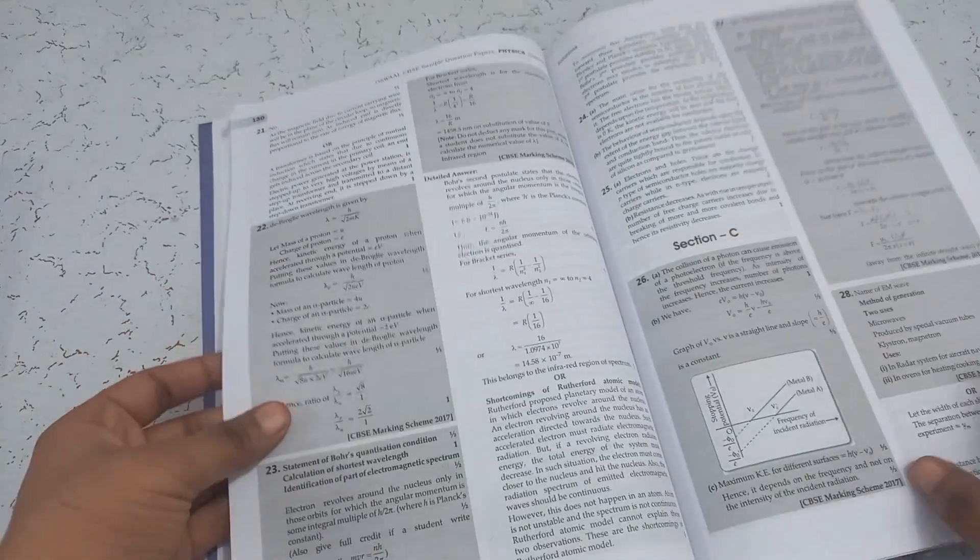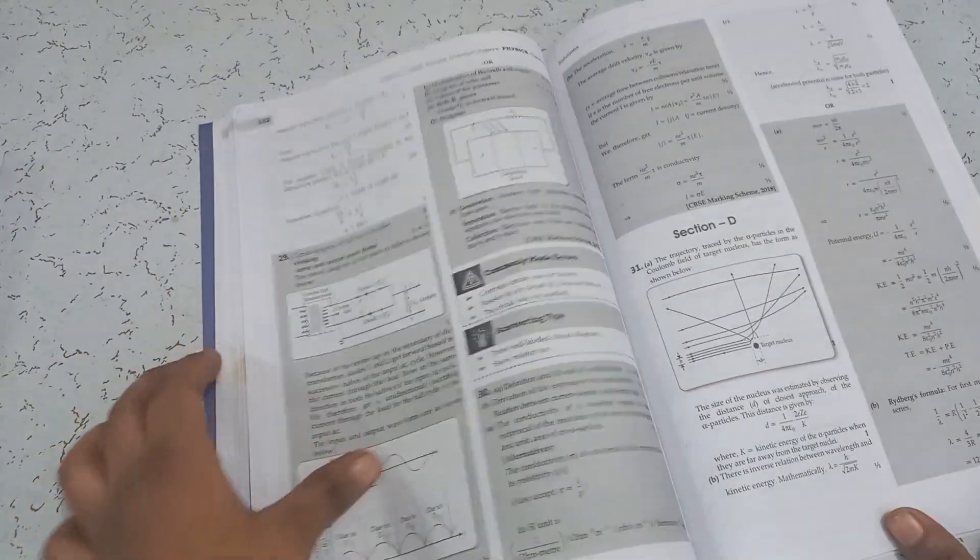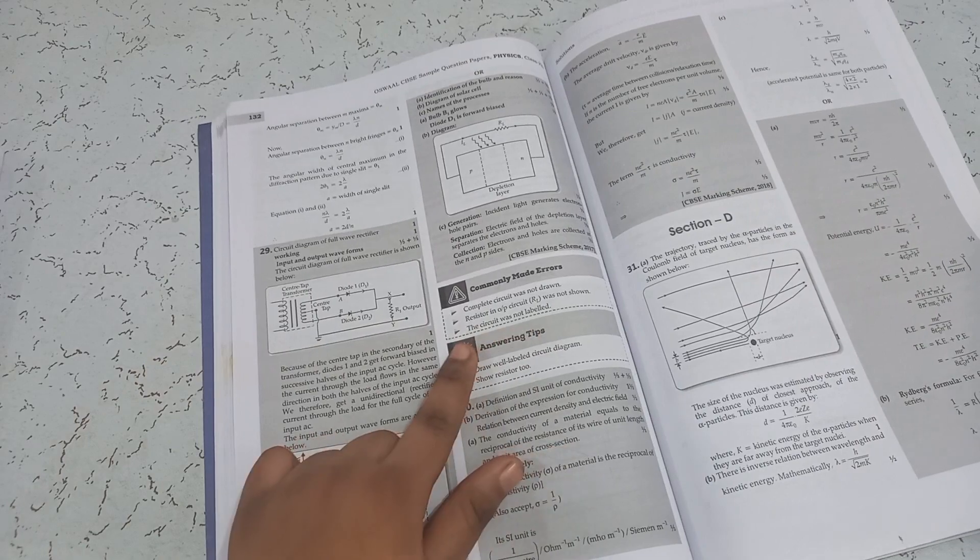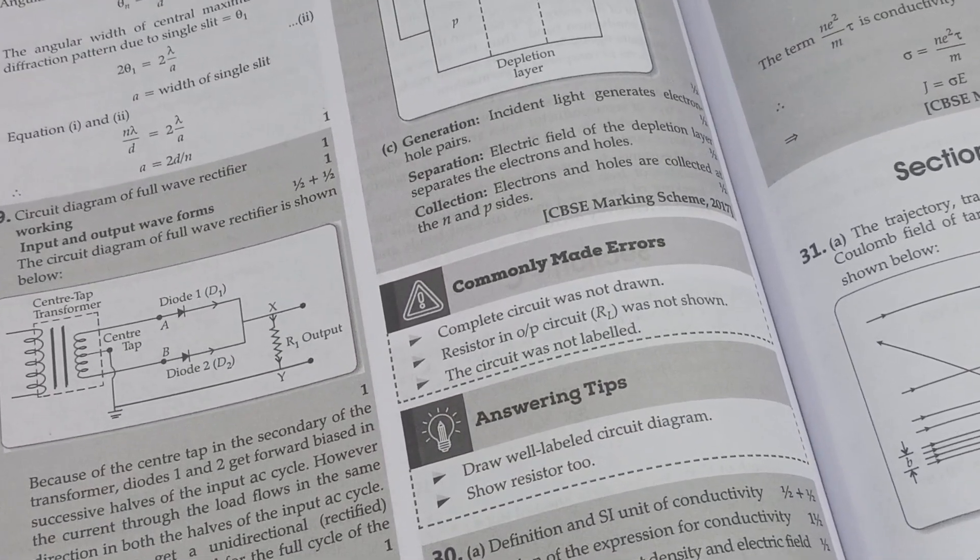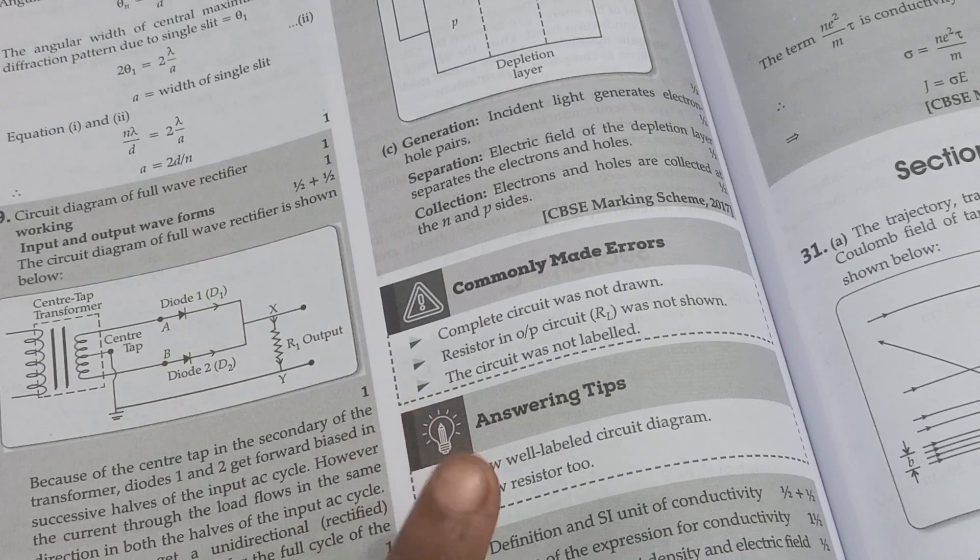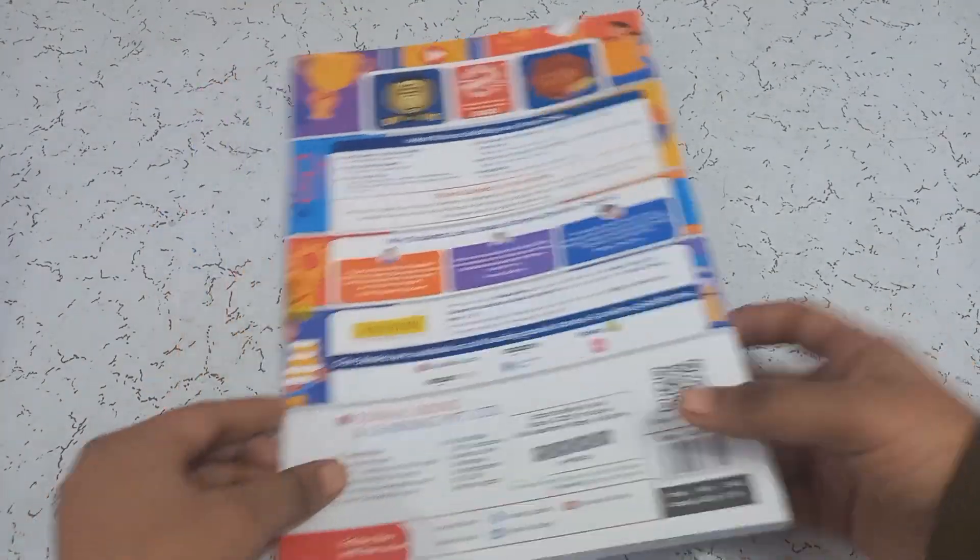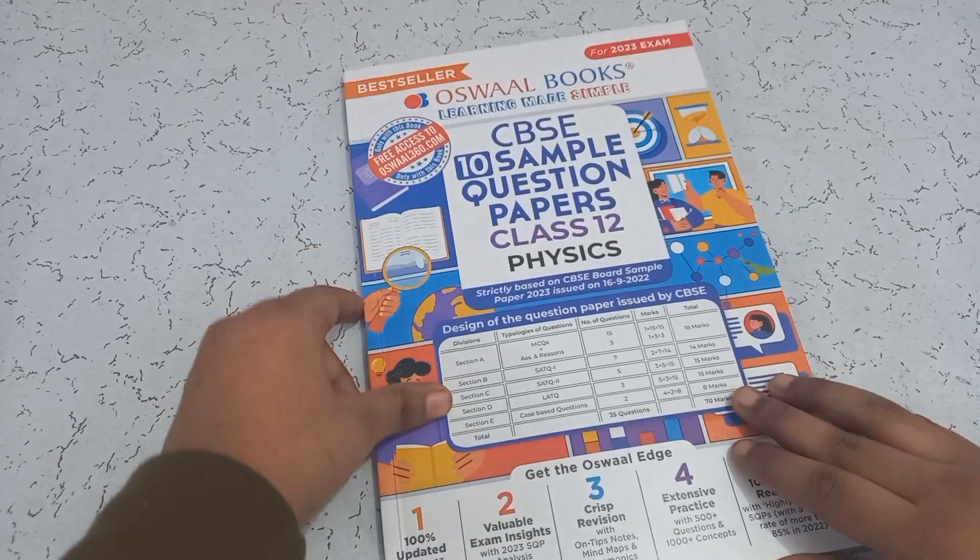While solving questions, I also found some methods which I used wrong which are commonly made errors. They also written this that what are the commonly made errors and the answering tips for those. Now, this was all about physics. Now, let's come to those 2 books.